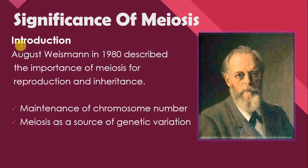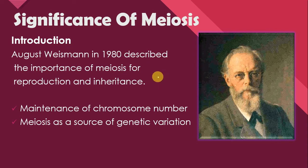Let's see who introduced the significance of meiosis for the first time. August Weissman in 1880 described the importance of meiosis for production and inheritance. He was the scientist who introduced meiosis's significance for the first time, saying that meiosis plays an important role in reproduction and inheritance.